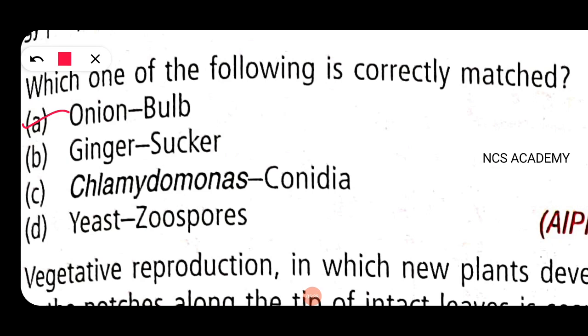If we use onion, it is propagated by bulb, which is an underground modified stem. It is the right option.